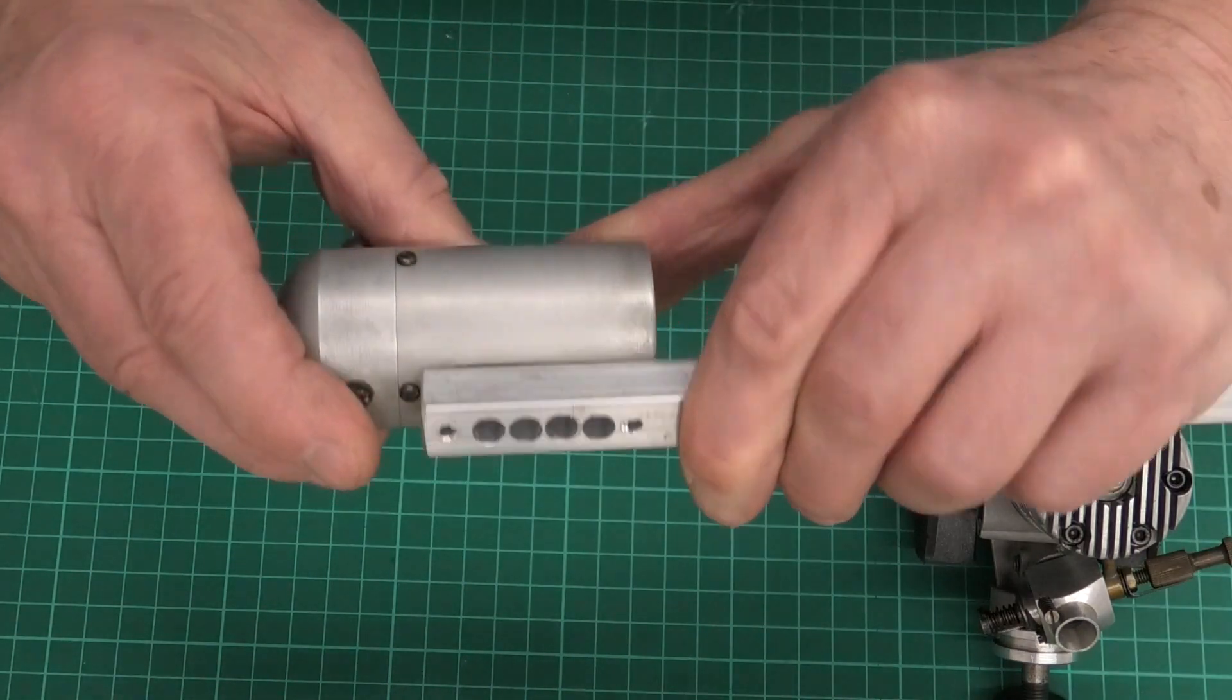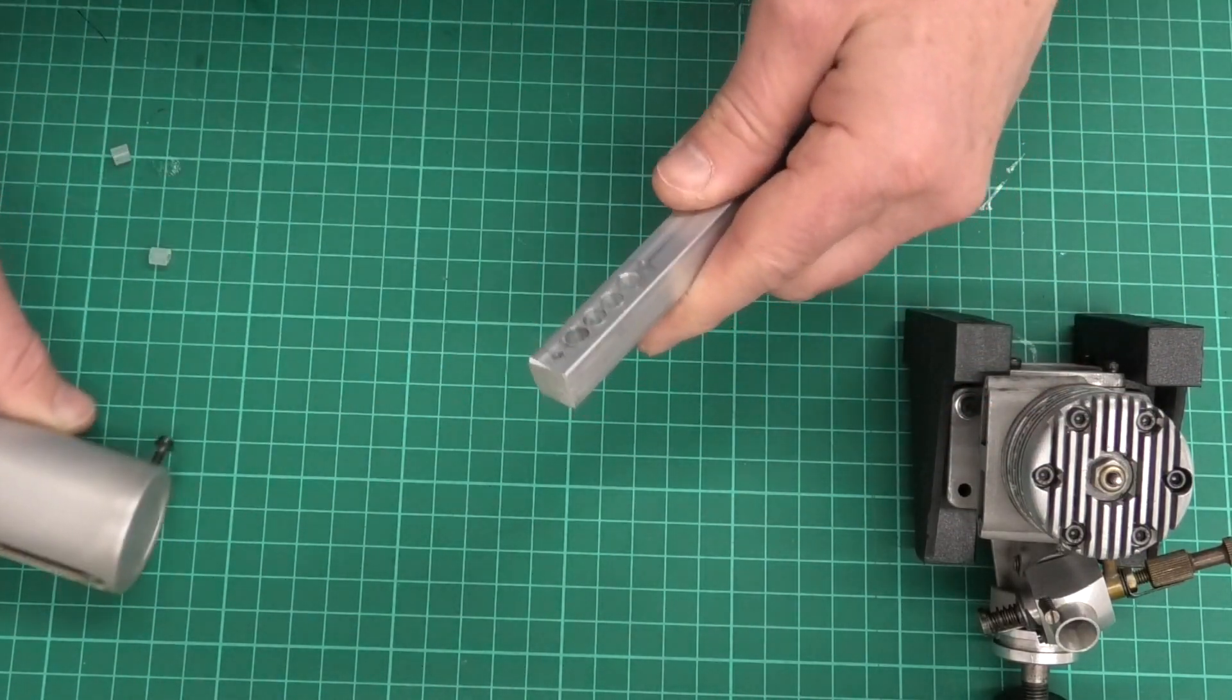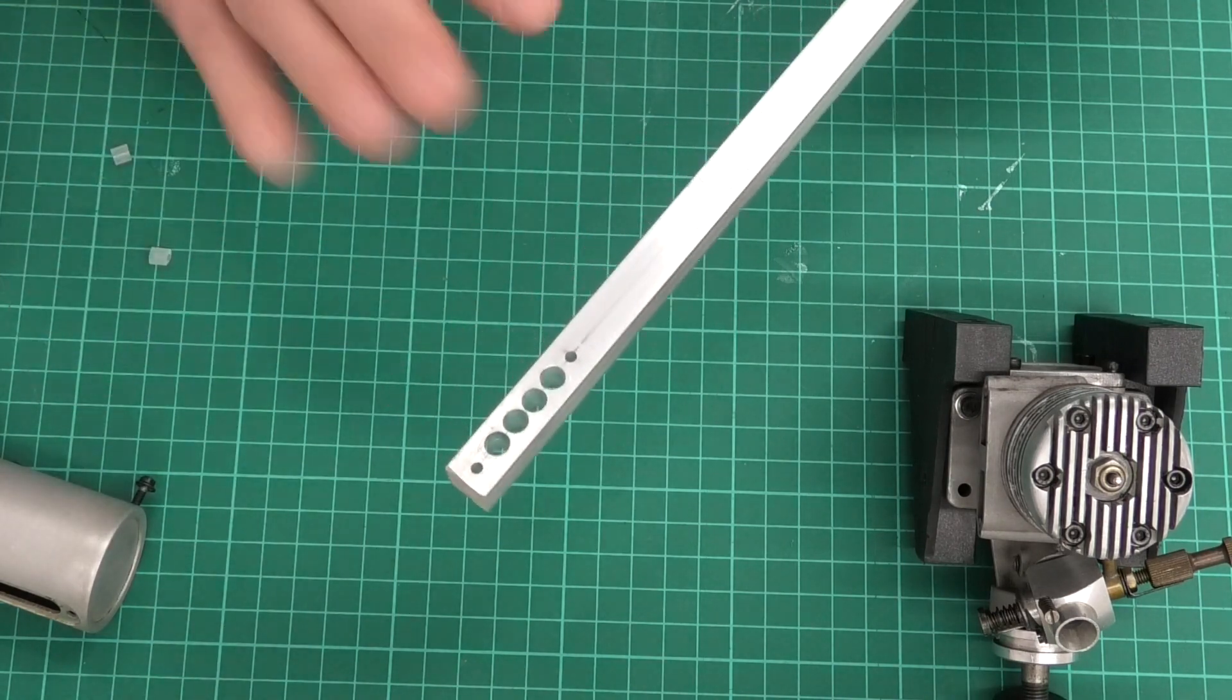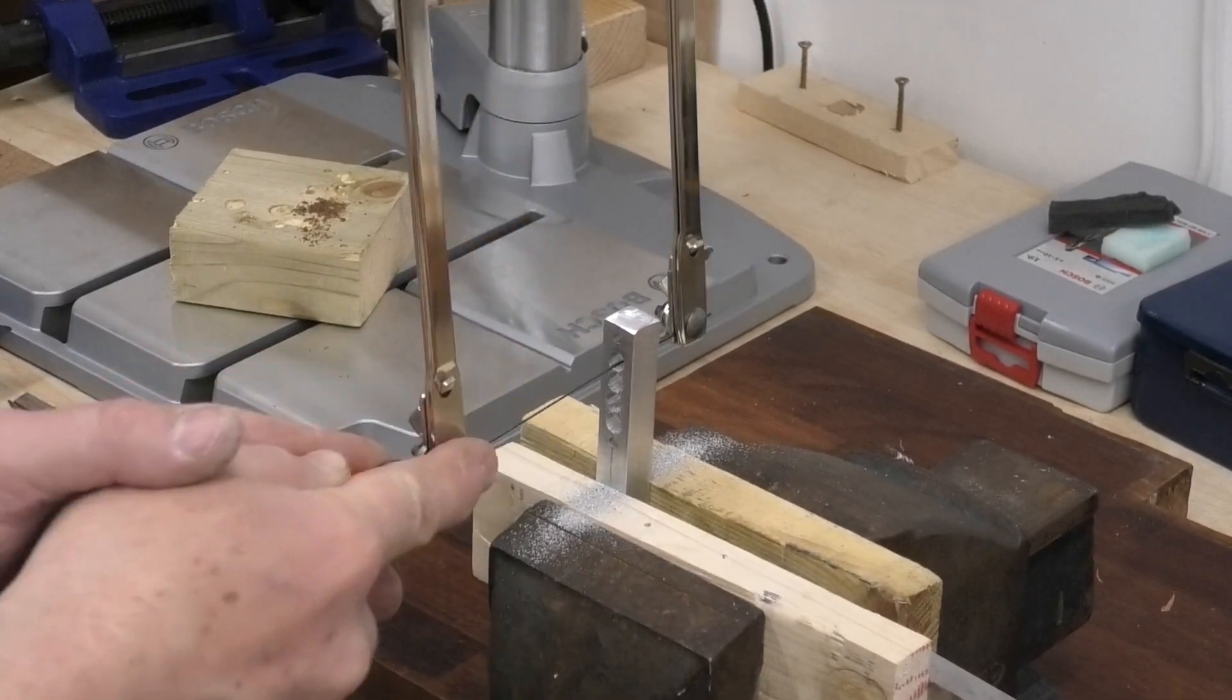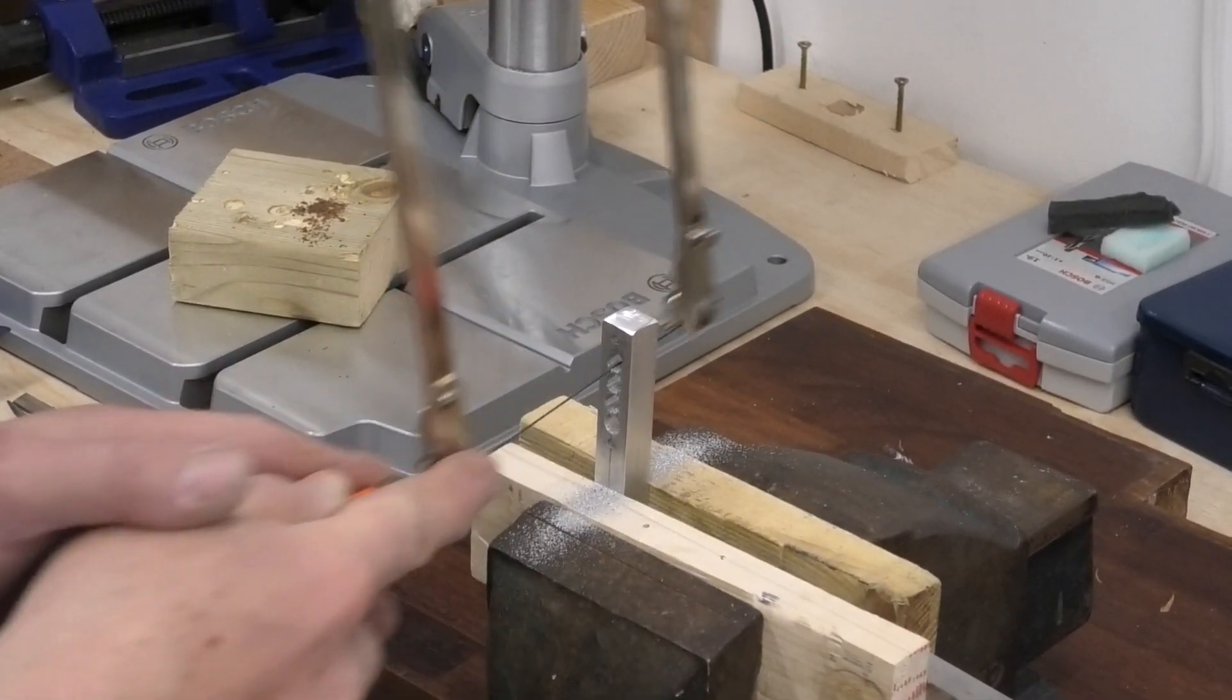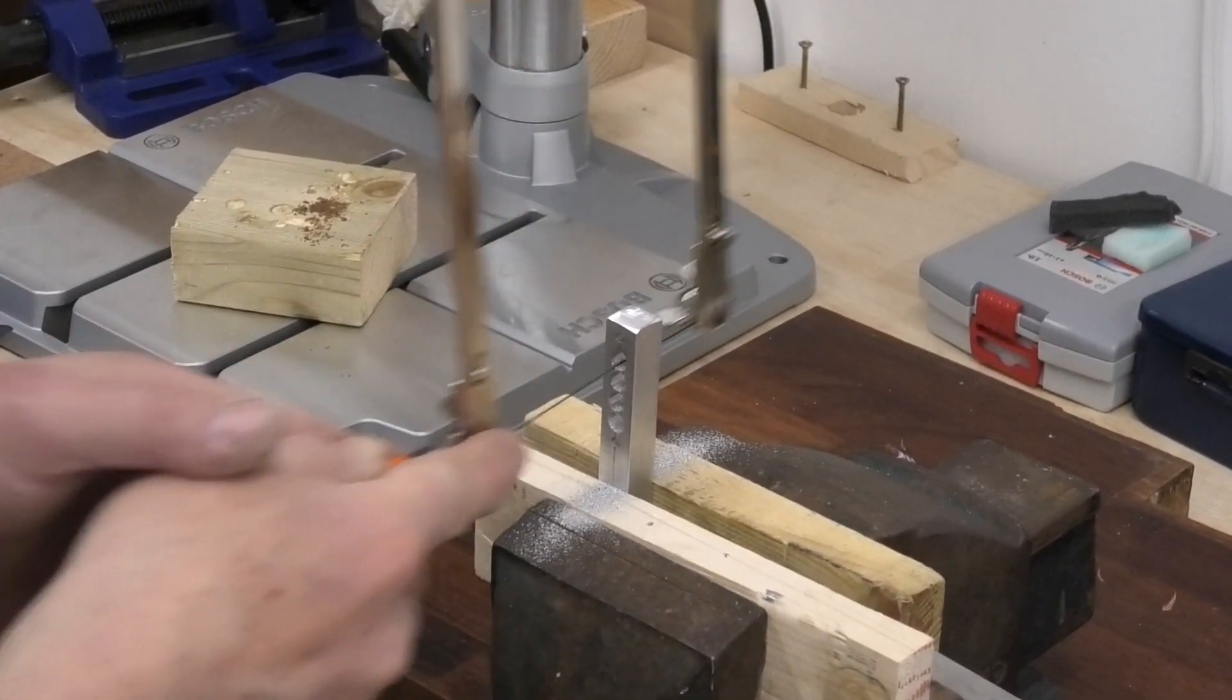What I'm going to do now is put this in the vice and file at this exhaust port. I'm just using a fretsaw with a metal blade to cut out between the holes before I actually file the channel to shape.